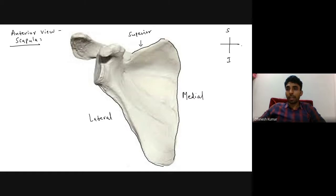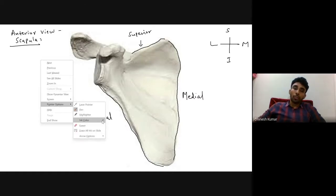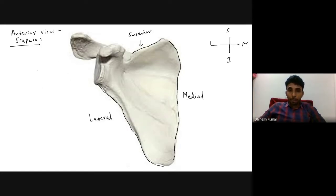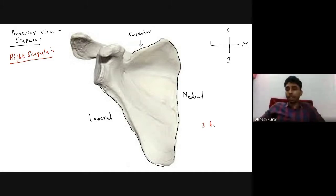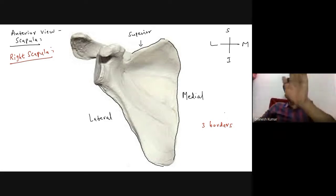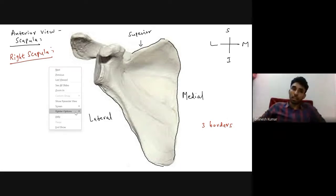With the orientation of superior, inferior, medial, and lateral directions, you can conclude this is the right scapula. There are some points which will help us determine the side of the scapula, which we'll see later. So the three borders of the scapula from this diagram are: medial border, lateral border, and the superior border.